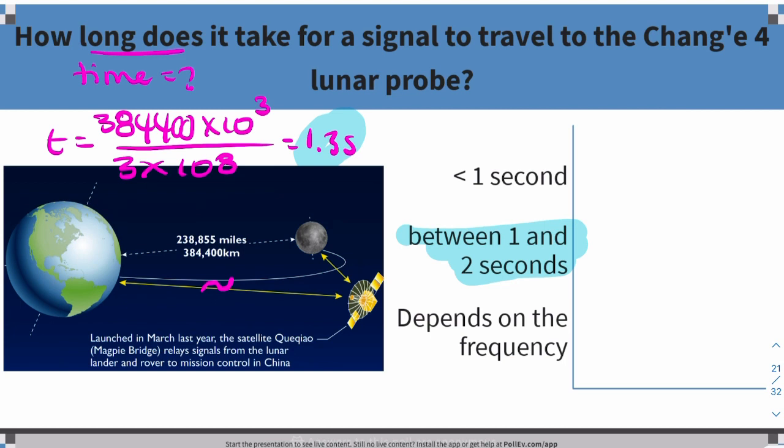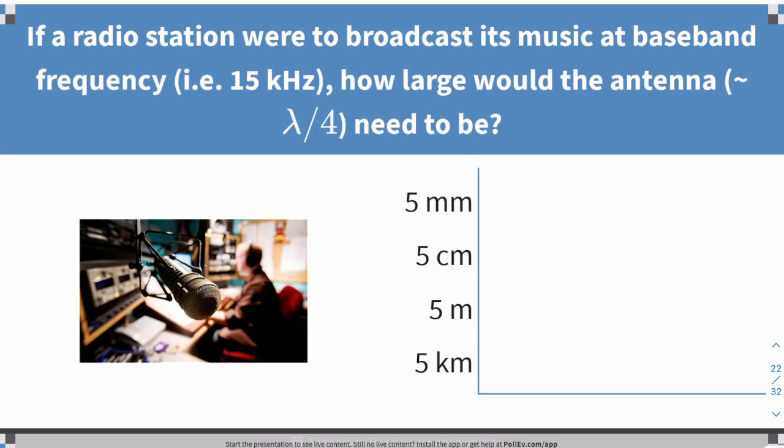Does the answer depend on the frequency? No. The wave equation c = fλ means frequency affects the wavelength, but not the speed. The time depends on the speed of light, so the frequency makes no difference. That was the point of this question.